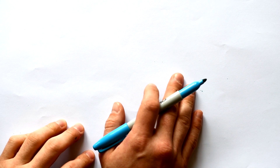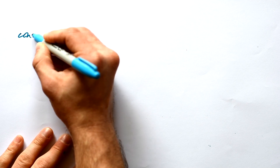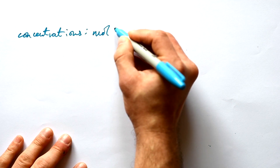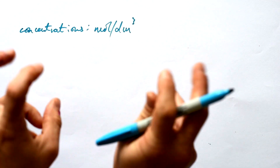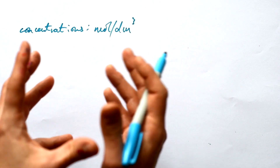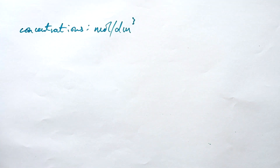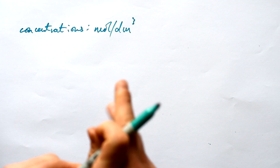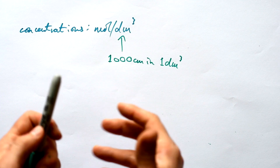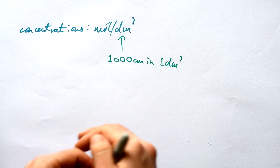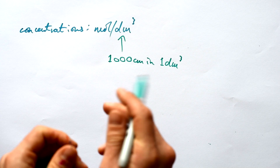Here's a quick one — just a couple of pointers on concentrations and solutions. Concentrations are usually given in moles per decimeter cubed. A decimeter is 10 centimeters, so we're talking about a box of 10 cm × 10 cm × 10 cm, which means there are 1000 centimeters cubed in a decimeter cubed. So if you have a concentration in mol/dm³ but a volume in cm³, you need to convert to dm³ first before doing any calculations.